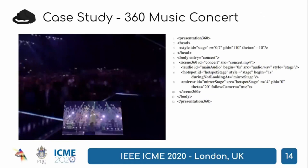The third application, 360 Music Concert, follows the 360 video with guided attention scenario. The viewer is presented with a 360 video of a music concert, and while looking away from the stage, he is presented with a live view of the stage on the bottom part of his view. We use the hotspot element to define the position of the stage, and the mirror element to show the picture-in-picture live view, as shown in the image on the left. Moreover, the audio of the concert is also positioned at the stage position and used to guide the user's attention. As the position of the audio and hotspot are the same, we define it as a style in the head, and both elements reuse it.